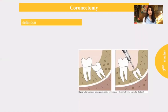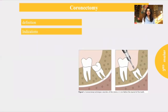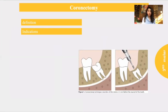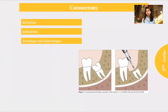Finally, we have coronectomy, which means removing the crown of the impacted tooth and leaving the roots behind. The indication is a deeply impacted third molar with very close proximity to the inferior alveolar nerve. The advantage is that when the crown is removed, the tooth becomes non-functional, the roots become resorbed, and with resorption and remodeling of the alveolar bone, the roots become superficial and easier to remove. The disadvantage is it may lead to infection or formation of pathology due to the remaining roots.